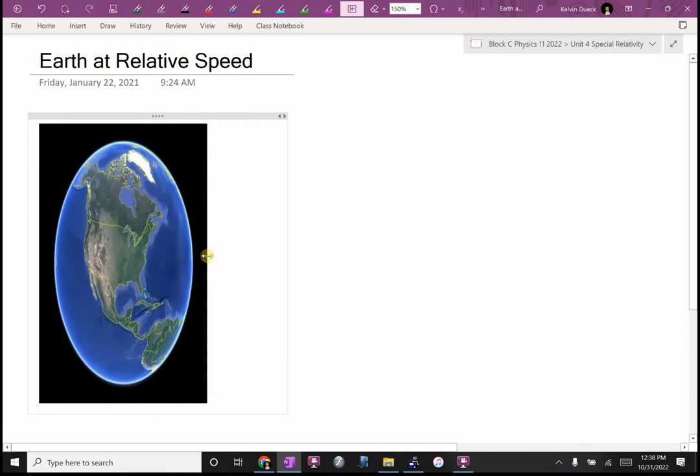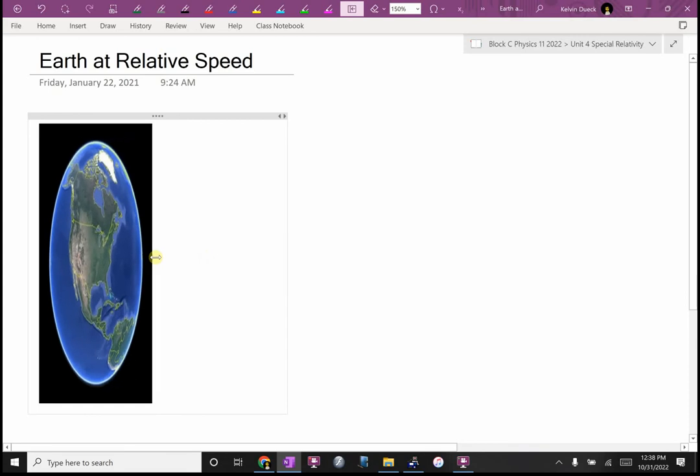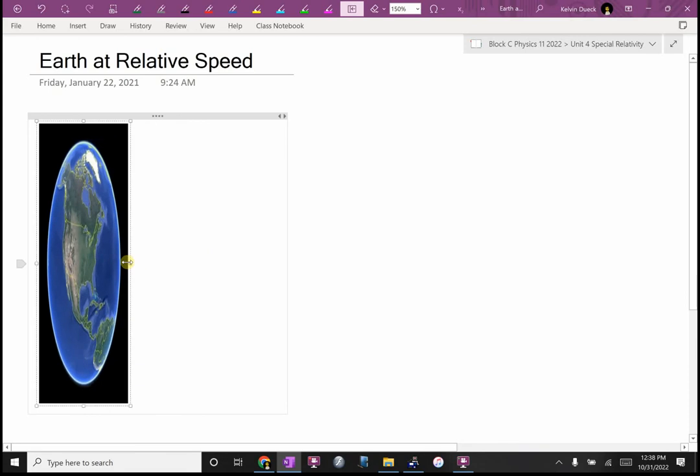As you went faster and faster, assuming you're traveling to the left or to the right, in the direction of travel, you would find that the earth would look like this. And not only look like this, in your universe, every experiment that you would do would say that's what the earth looked like. Any experiment you tried to run about the distance from each side of the equator, you would get that as your answer. Because in your reference frame, that's how long the earth is. Because as far as you're concerned, the earth is what's moving past you.